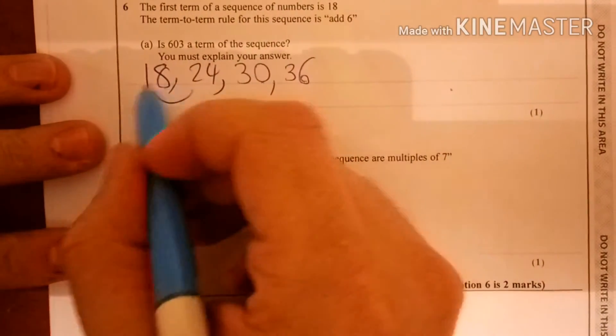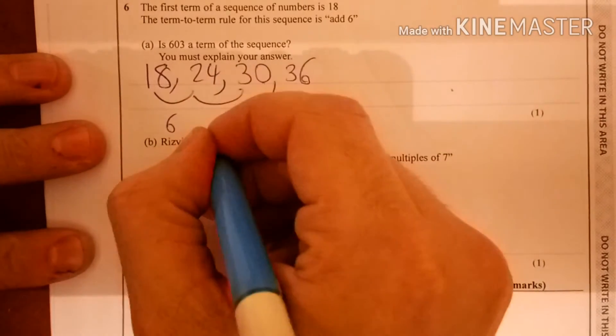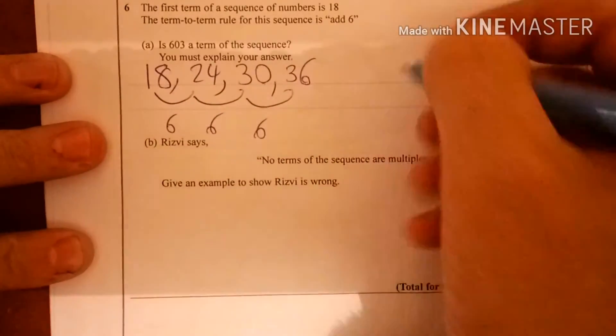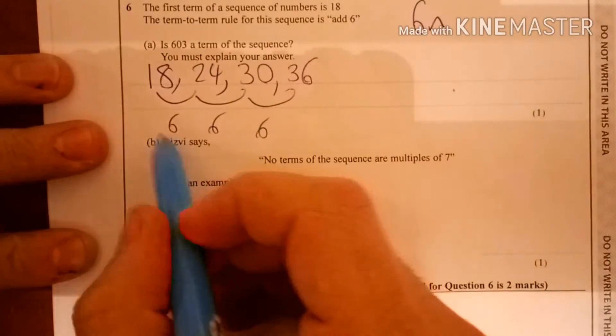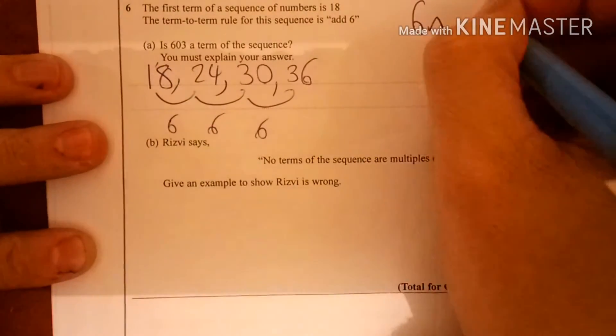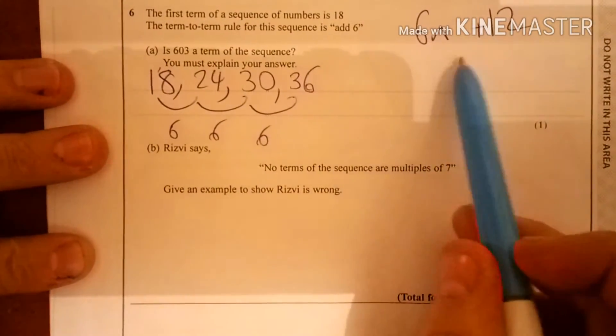Now, nth term. We look at the difference here. And the difference here is 6. And to be honest with you, it says it there. So it's going to be 6n. How do I get from 6 to 18? I have to add 12. So my nth term is 6n add 12.